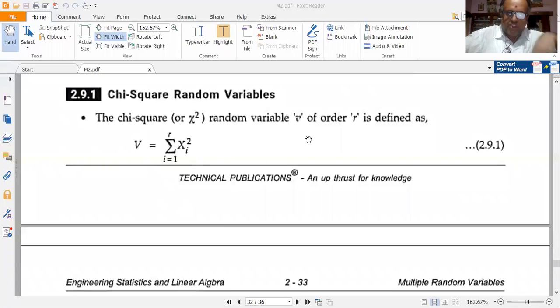We shall define this. It's one of the very important advanced probability distribution functions that is exclusively used in advanced communication engineering and advanced signal processing. The Chi-square random variable V of order r is defined as...